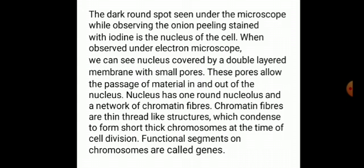When observed under an electron microscope, we can see the nucleus covered by a double-layered membrane with small pores. These pores allow the passage of material in and out of the nucleus. The nucleus has one round nucleolus and a network of chromatin fibers. Chromatin fibers are thin, thread-like structures which condense to form short, thick chromosomes at the time of cell division. Functional segments on chromosomes are called genes.